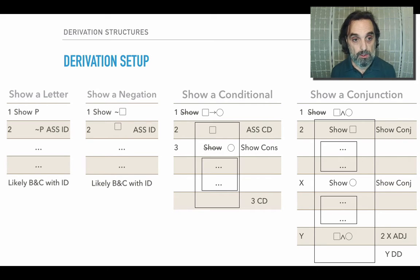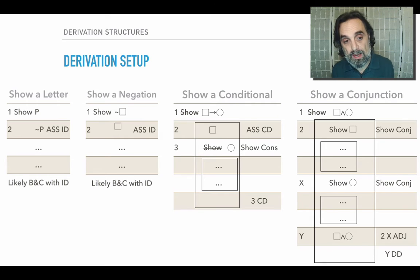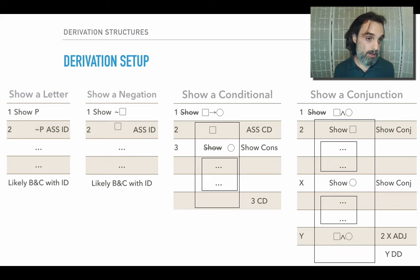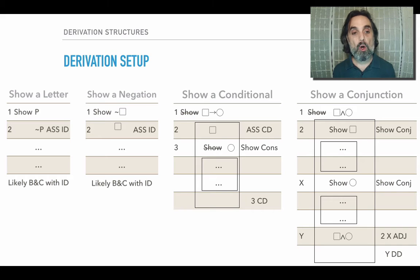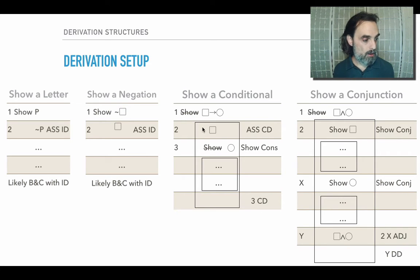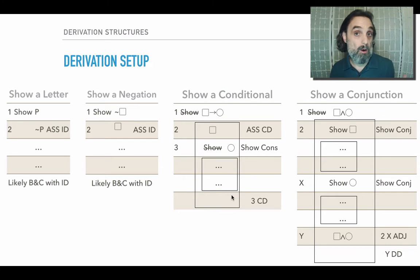If we're trying to show a conditional, then we'll want to say assume CD, and then show the consequent. What happens after that? It depends upon what the consequent is. If the consequent is a letter or a negation, then we would make an indirect assumption. If the consequent is itself a conditional, then we'd repeat this — we'd say assume CD and show the consequent again. Whatever happens in there depends upon what the circle actually is.